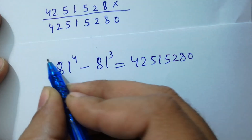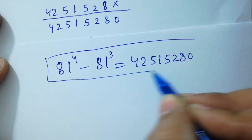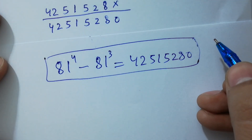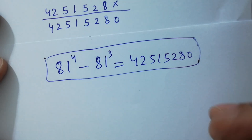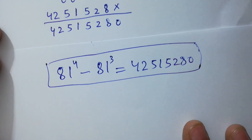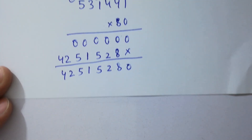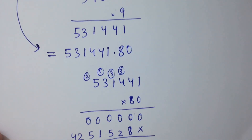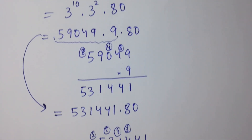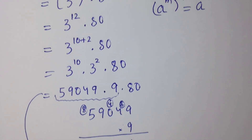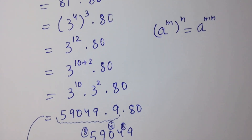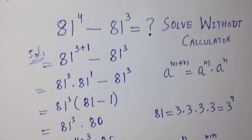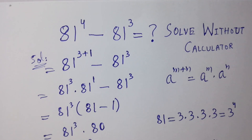Finally, 81⁴ − 81³ = 42,515,280. This is our final answer without using any calculator. Thanks for watching this video. Please subscribe to the channel to get notifications of new videos, and don't forget to share with your classmates and friends. Bye!